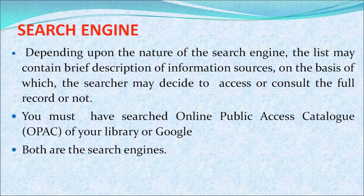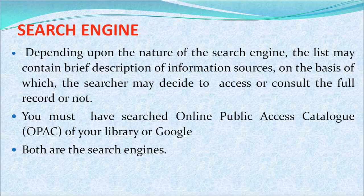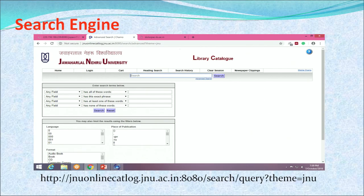Depending upon the nature of the search engine, the list may contain a brief description of the information sources, and you can decide whether to access the full record or not. When results appear on the screen, you finally decide whether to use the retrieved information or proceed to the next step. As an example, a screenshot from Jawaharlal Nehru University's online library catalogue is shown, where one can search for books available in their library database.